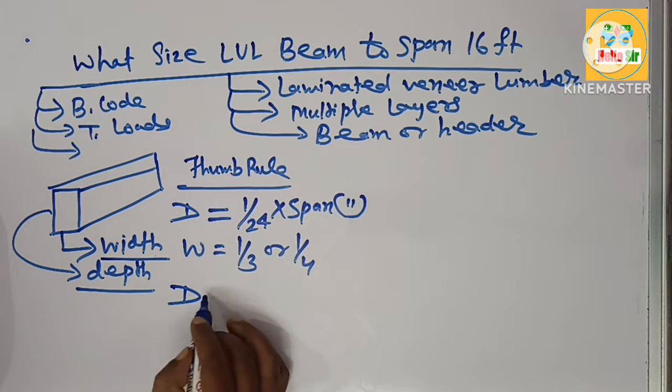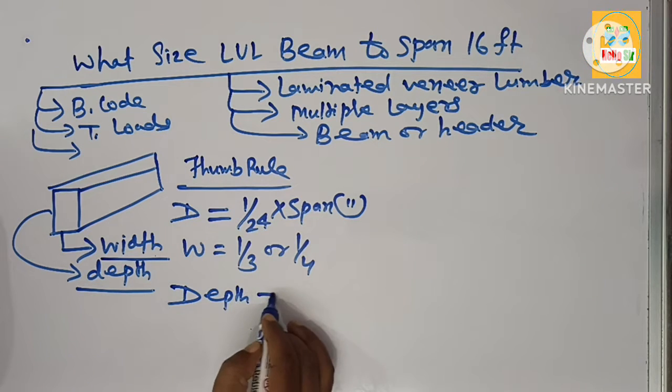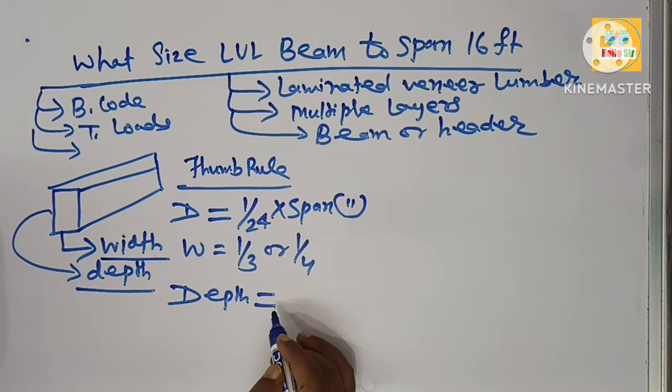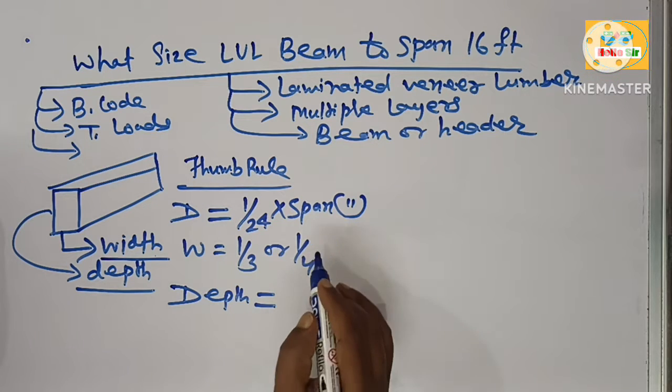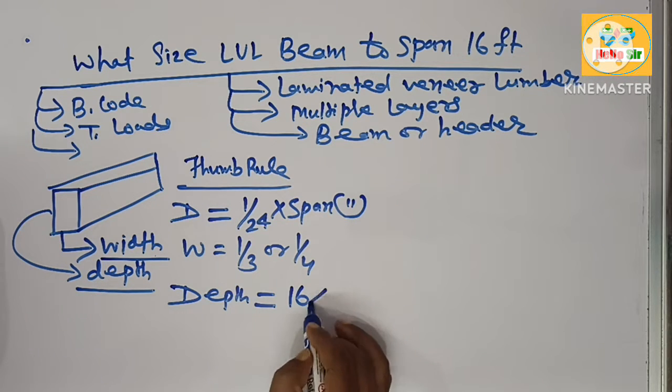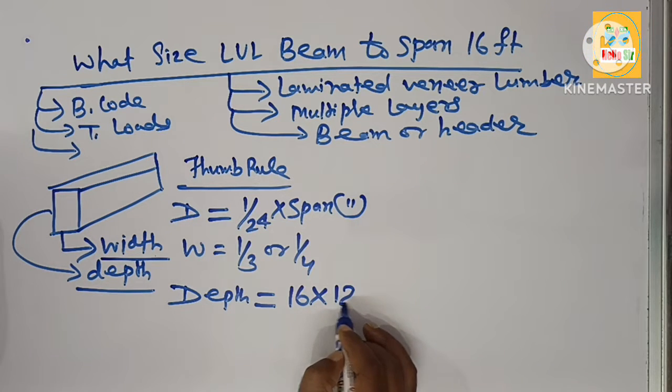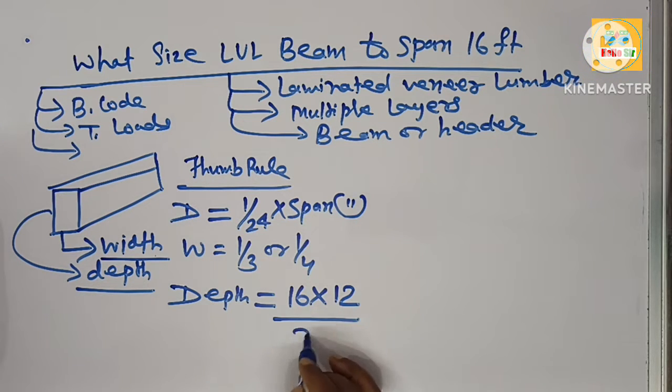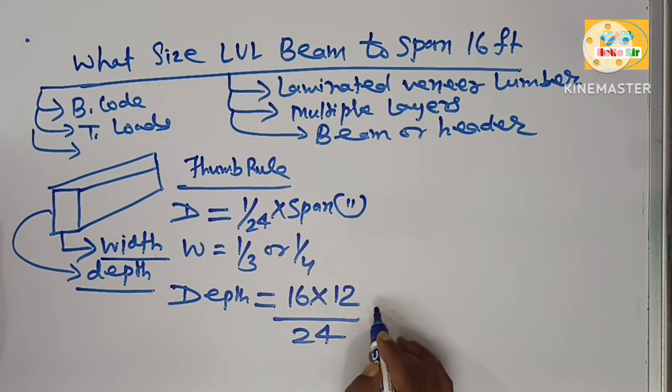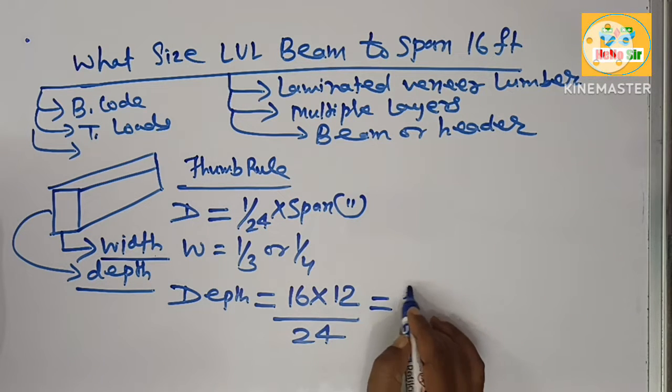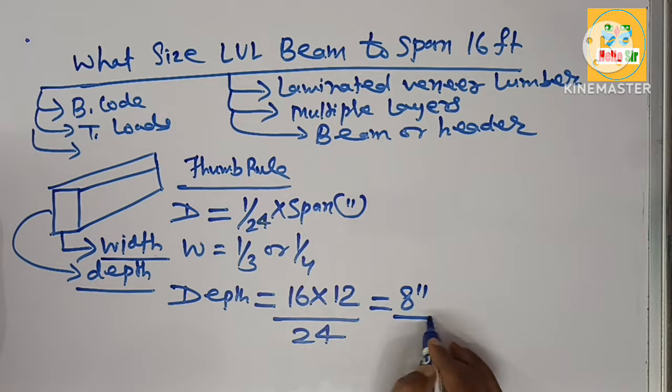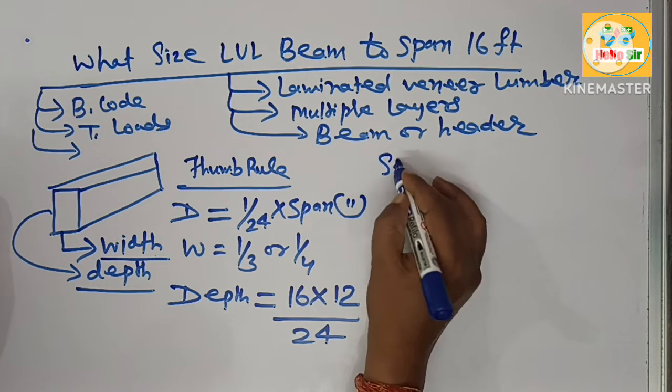First we find the depth of the LVL beam required to span 16 feet. The span length 16 feet is converted to inches. That's why it is multiplied by 12, divided by 24. This will come to about 8 inches.